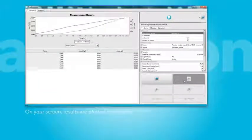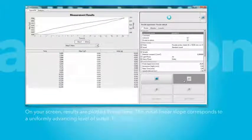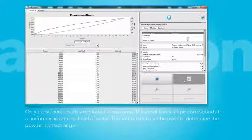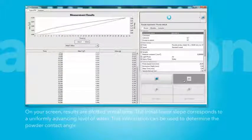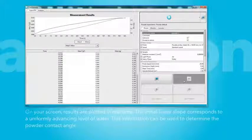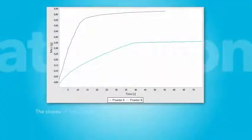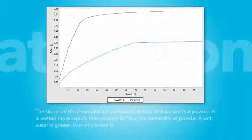Results are plotted in real time on your screen. Initial linear slope corresponds to a uniformly advancing level of water. This information can be used to determine the contact angle. The slopes of the two samples are compared directly, and we see that powder A is wetted more rapidly than powder B. Thus, the wettability of powder A with water is greater than of powder B.